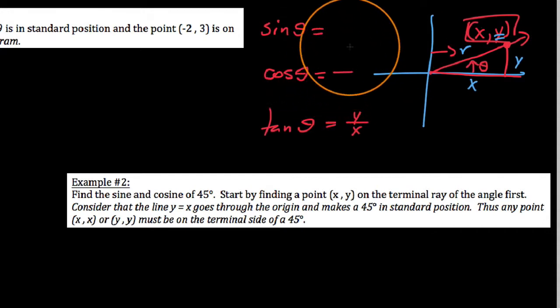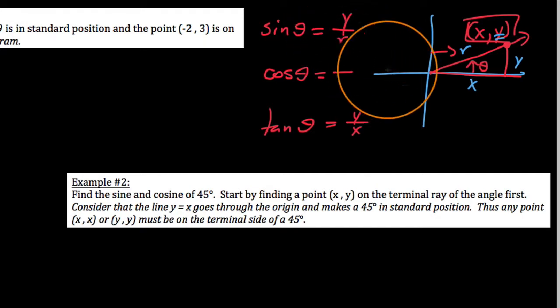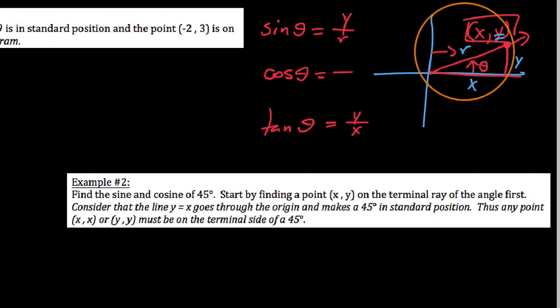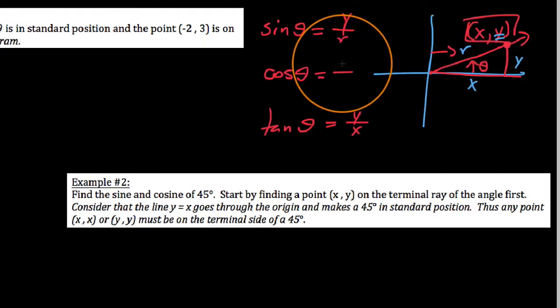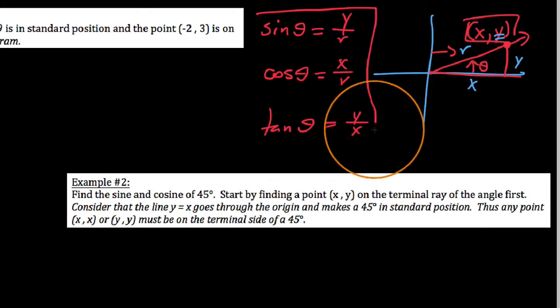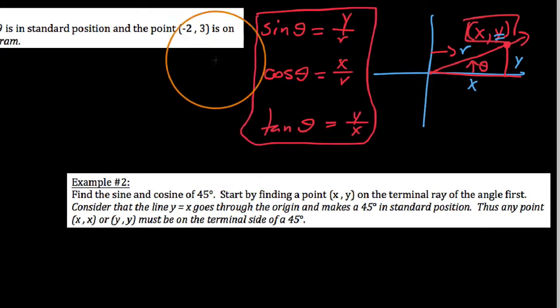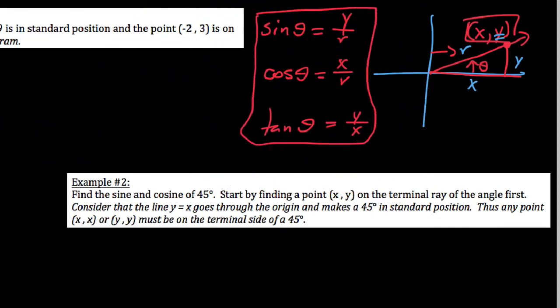So we say the definition of tangent of an angle in general is just y over x, so long as it's in standard position and we have a point on the terminal side. Same thing with cosine and sine: sine is opposite over hypotenuse, so we have y over r, and adjacent over hypotenuse for our cosine, so we say x over r. I'm not going to list the reciprocal functions because we can just flip those over. Let's go ahead and put these to use.